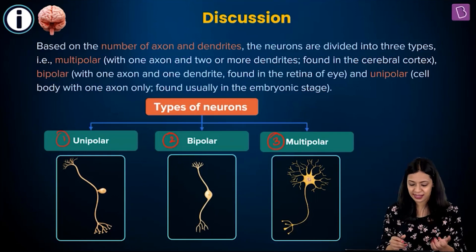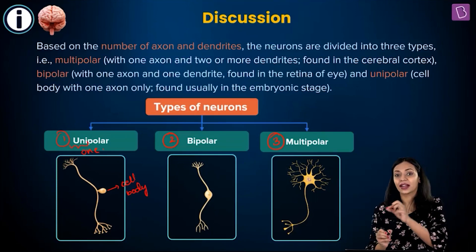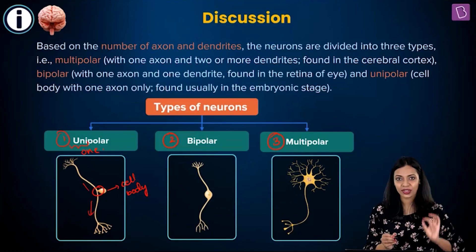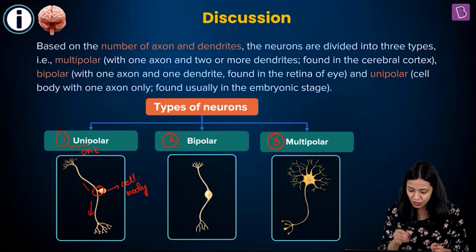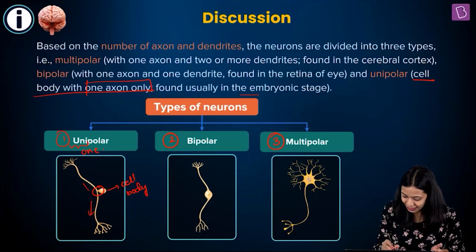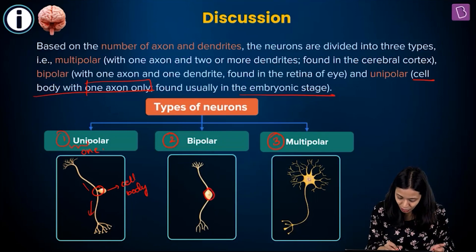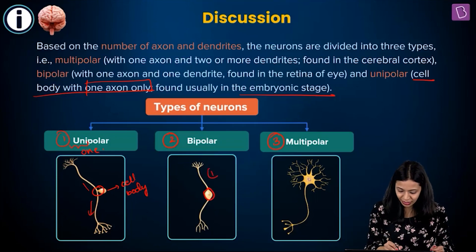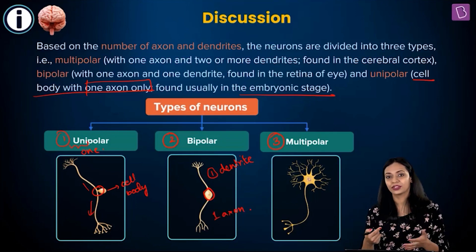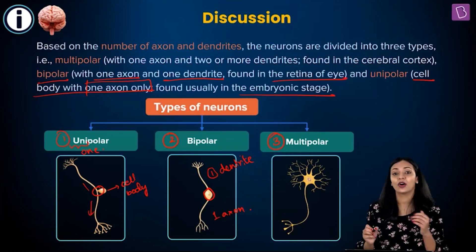Unipolar — as the name suggests, uni means one. There is just one extension arising from the cell body, which is further branched, but only one extension comes from the soma. Unipolar neurons have a cell body with only one axon and no dendrites; they are found in the embryonic stage. Bipolar neurons have two extensions — one dendrite and one axon — and are found in sensory structures like the retina of the eye.